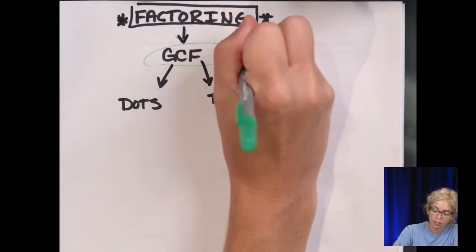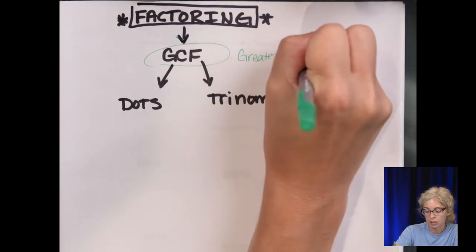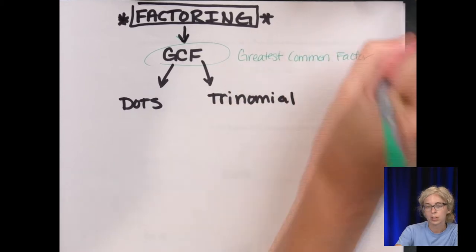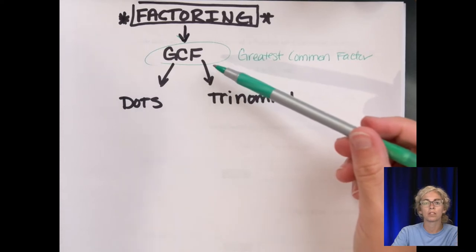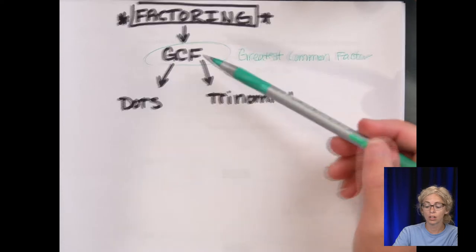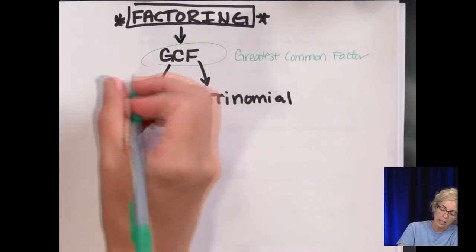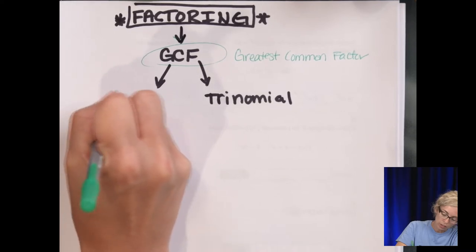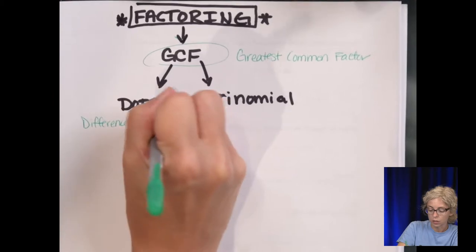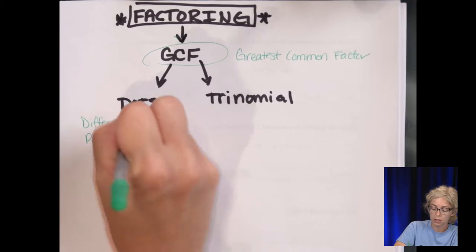GCF stands for greatest common factor, because I always want you to check to see if there's a greatest common factor first, and then factor it out. If not, it's either going to be DOTS or trinomial factoring, and DOTS stands for difference of two perfect squares.